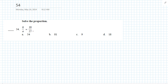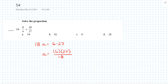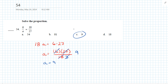Divide each side by 18, so A equals 6 times 27 over 18. We can simplify: 6 goes into 18 three times, and 3 goes into 27 nine times. So A equals 9. Answer C.